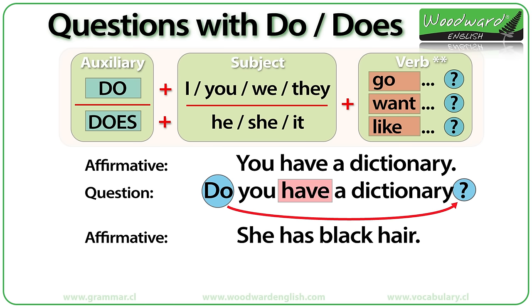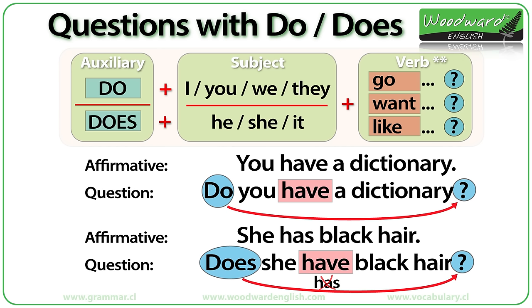Does she have black hair? HAVE — because the infinitive is TO HAVE and we just remove the TO. Does she have black hair?